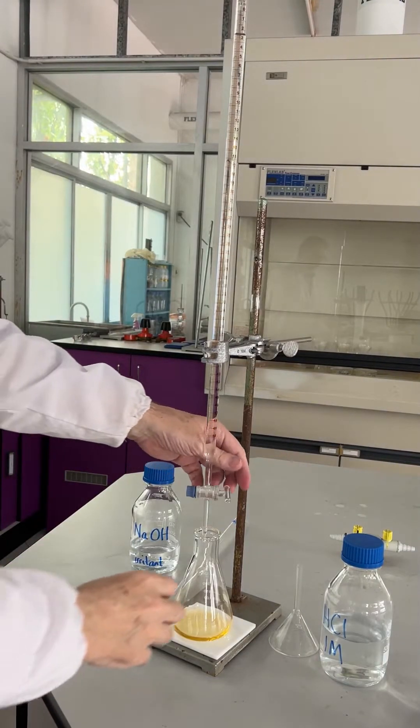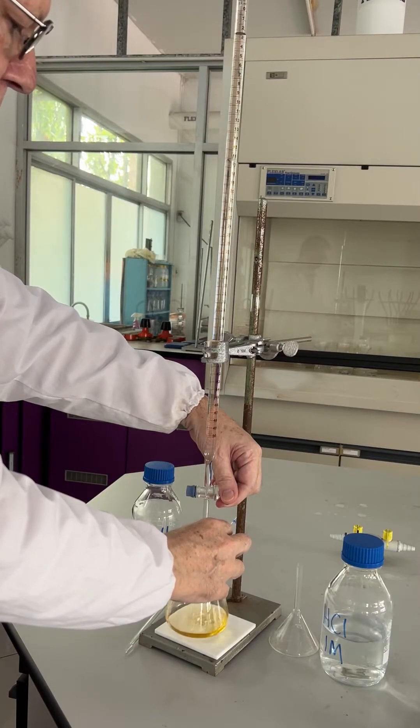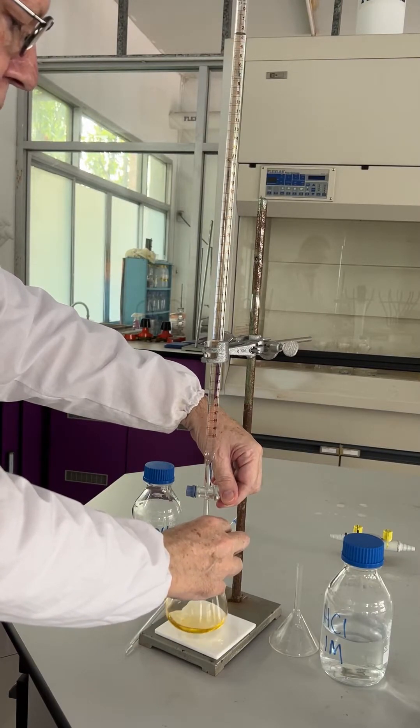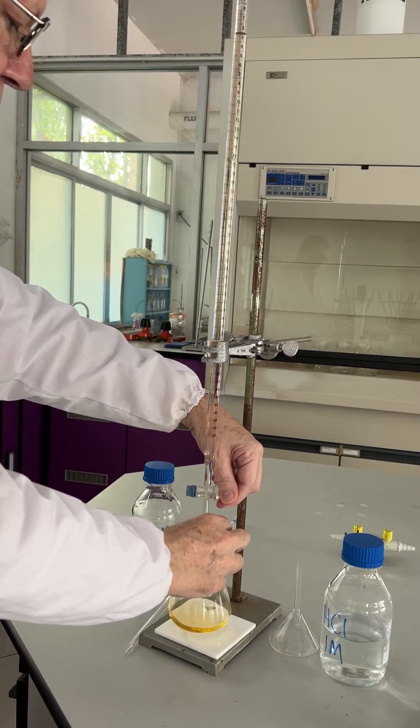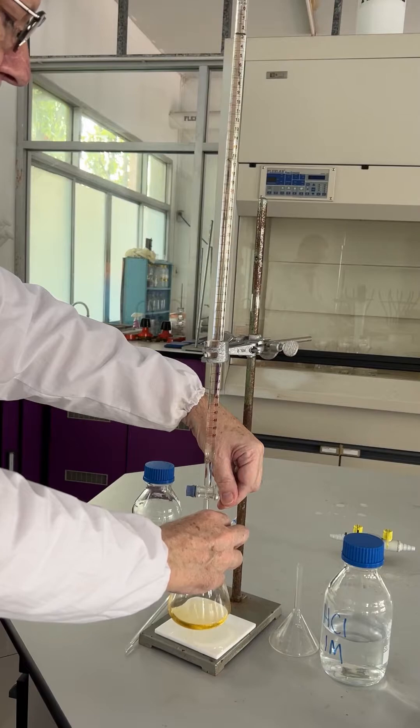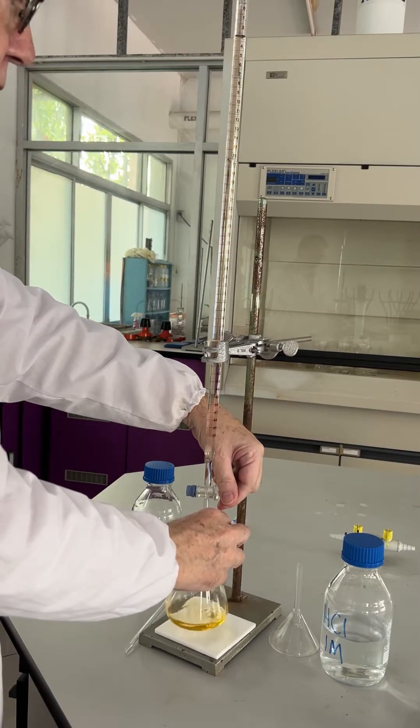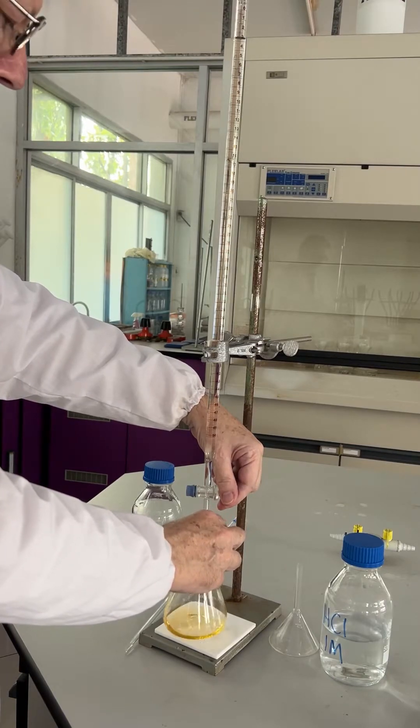We now need to run... sorry, acid into the alkali. And we stop adding when we get a permanent change in color. So we start at 2.4.